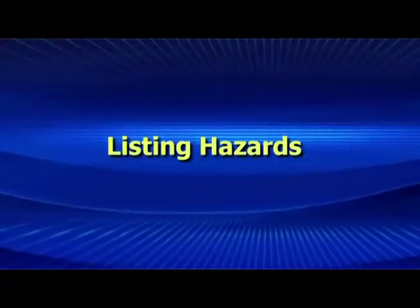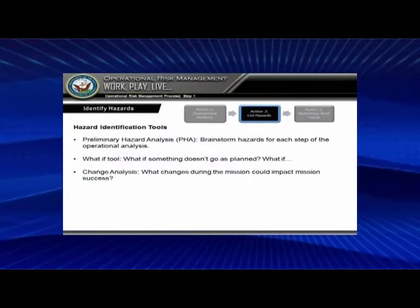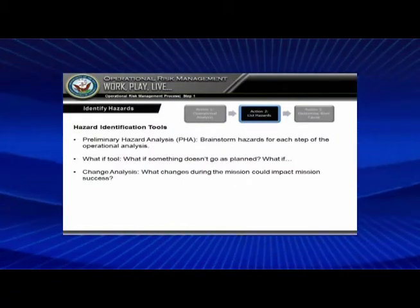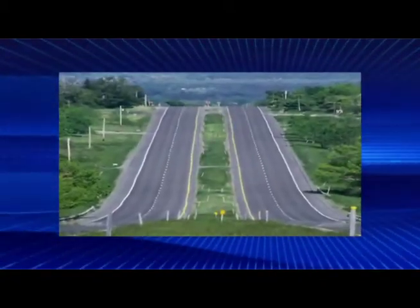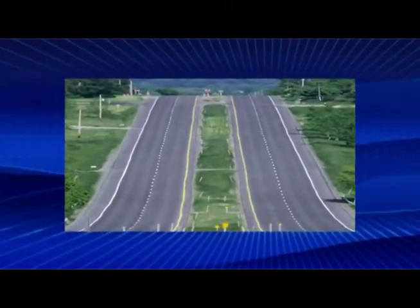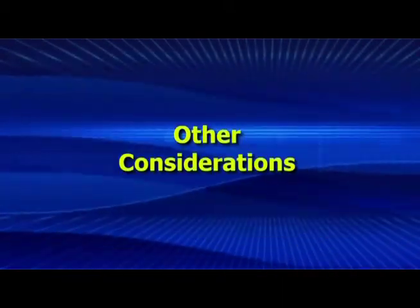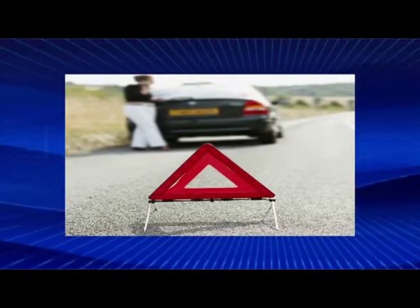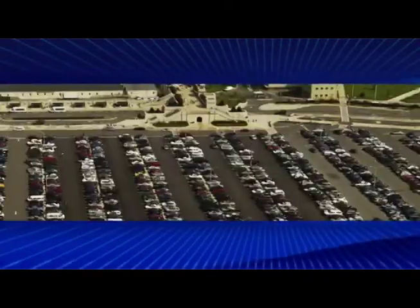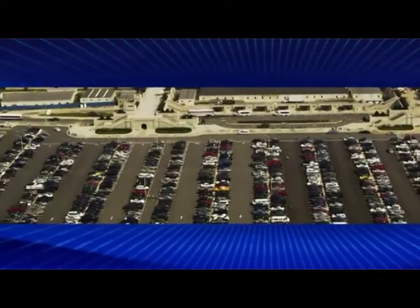So you're listing your hazards. The first part is the preliminary hazard analysis — brainstorm the hazards for each step — and then use the what-if tool and change analysis. For our drive-to-work example, following the prescribed route, we've identified routine traffic hazards: potholes, road maintenance. Other things to consider include distance, curves, adjusted contingencies like a flat tire, or your route being blocked due to construction. When you get to work, maybe somebody's already in your parking spot and you'll have to adjust.